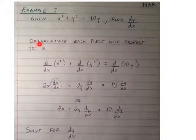And what we do is since we're finding the derivative, we're going to differentiate each piece with respect to x. So the derivative of x squared with respect to x, the derivative of y squared with respect to x, and the derivative of 10y with respect to x.